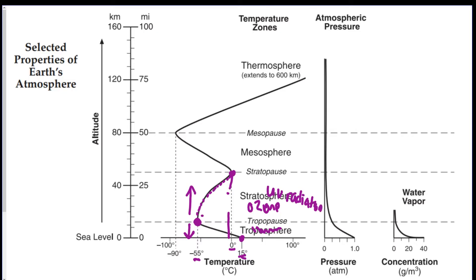Starting from the stratopause, going up into the mesosphere, temperature drops back down to negative 90°C — actually the coldest point in the atmosphere. Then in the thermosphere the temperature goes way back up. The pattern is: down in the troposphere, up in the stratosphere, down in the mesosphere, and up in the thermosphere.